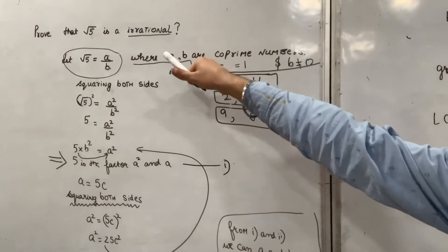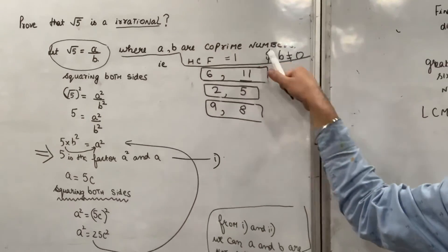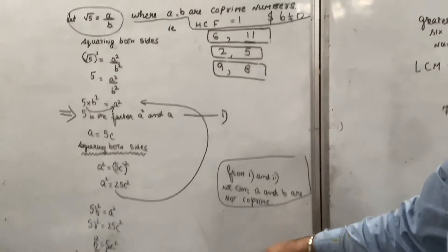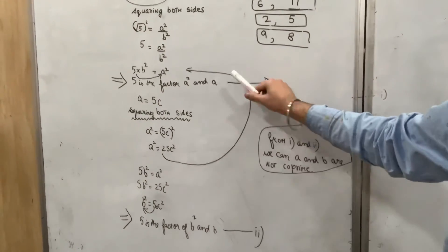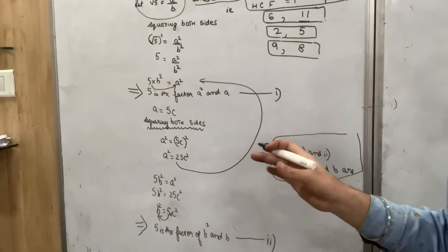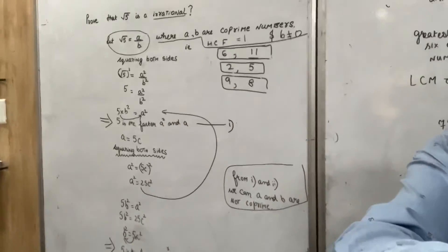For rationals p upon q or a upon b, coprime numbers have HCF 1 and b is not equal to 0. We can prove that HCF one will not come because a and b both have common factor 5.